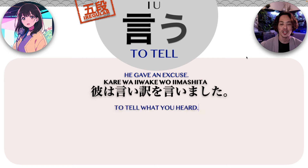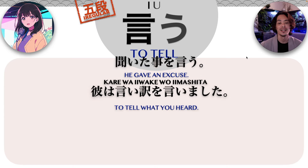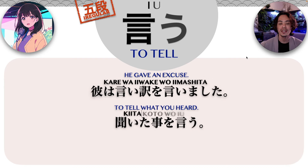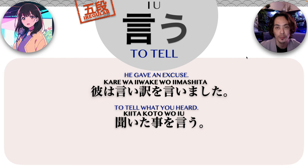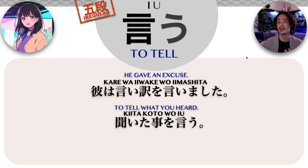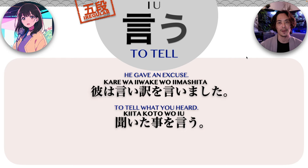Next, how would you say 'to tell what you heard'? In Japanese that would be: kiita koto wo iu. You could even say kiita koto iu to, blah blah blah — if I say what I heard, this is the fact. So kiita koto wo iu to, blah blah blah.